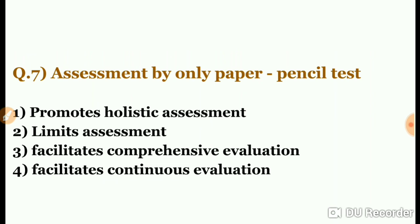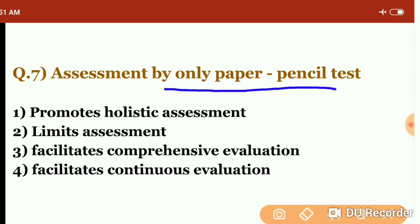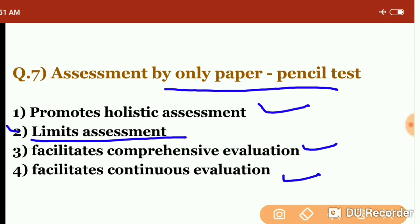Question seven: assessment by only pencil-paper test — the key word here is 'only.' It promotes holistic assessment, limits assessment, facilitates comprehensive evaluation, or facilitates continuous evaluation. Since we have so many assessment techniques and tools available, using only the pen-paper mode limits our assessment. The answer is the second option — it limits assessment — because restricting to just one mode constrains the overall evaluation.